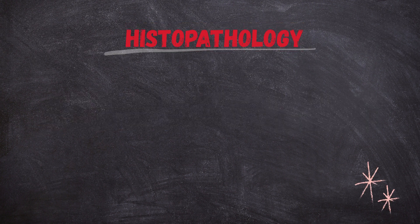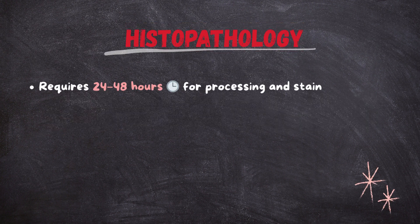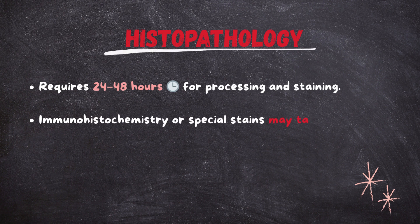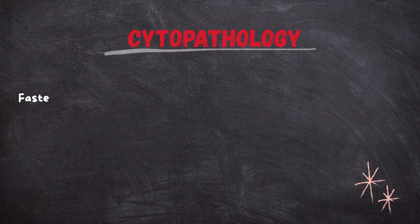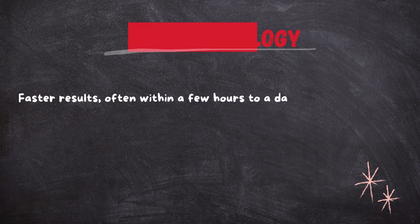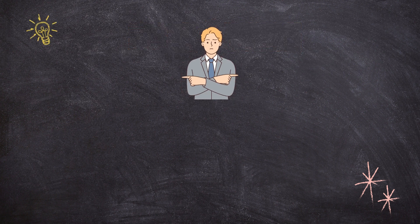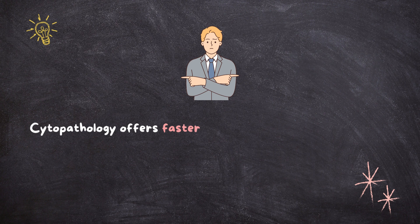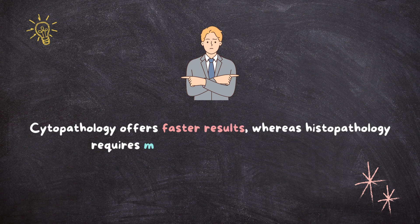Histopathology requires 24 hours for processing and staining; immunohistochemistry or special stains may take longer. Cytopathology offers faster results, often within a few hours to a day. Key difference: cytopathology offers faster results whereas histopathology requires more time for detailed analysis.